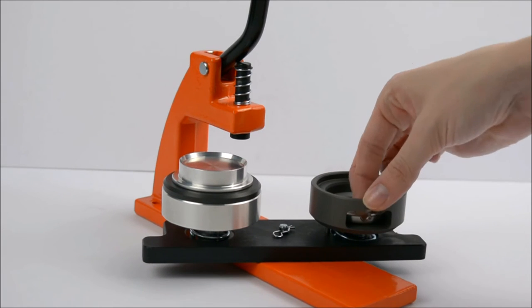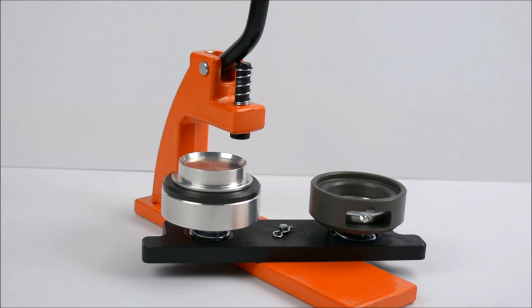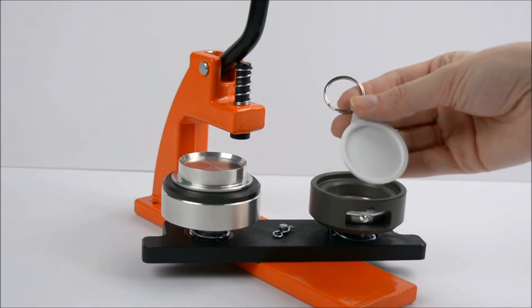Make sure there is no spacer in the second die. Then place the keyring back into the die, sliding the ring through the hole in the side.